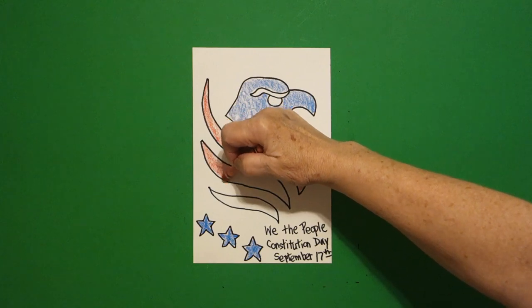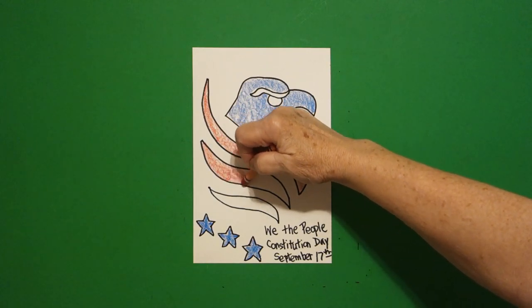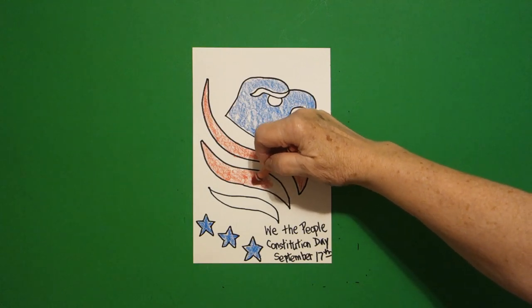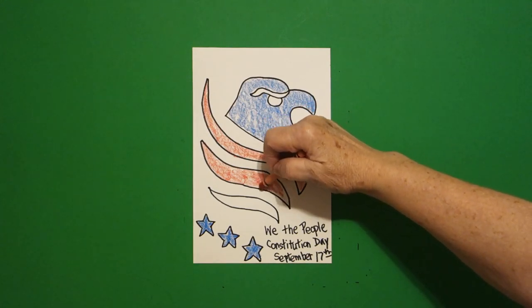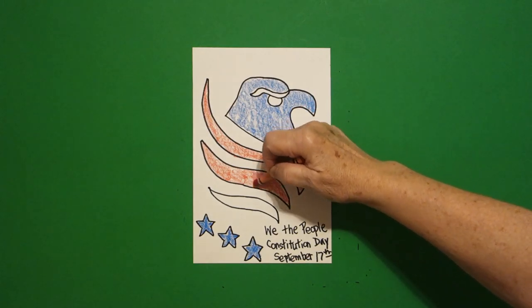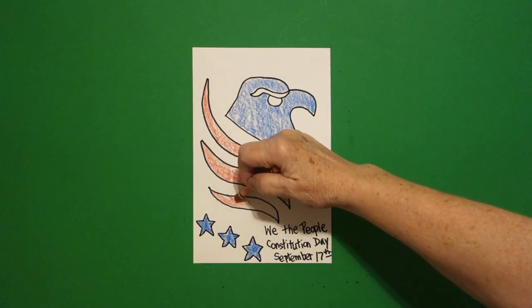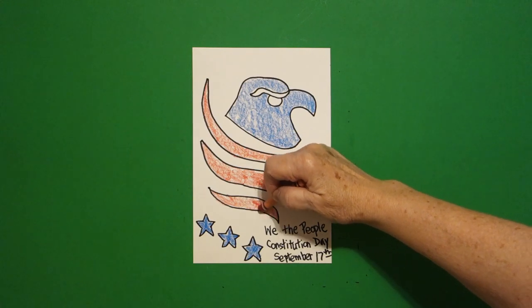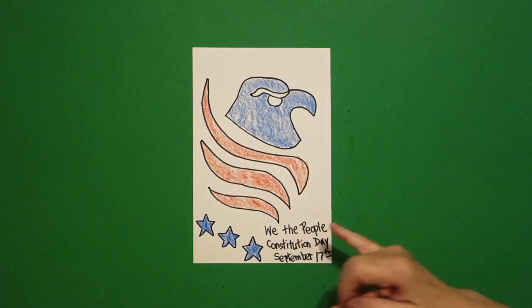So, we've got our flag colors, red, white, and blue. We have our symbols, American symbols, the bald eagle, and the flag. And it all commemorates September 17th, which is Constitution Day. And how does that start? We the people. Okay, let's see what this looks like all colored in.